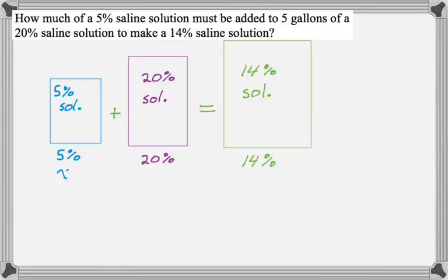I don't know how much 5% I have, so I'm going to call that x gallons. 20% I already have 5 gallons. So when I dump all of those together, I'm going to end up with x plus 5 gallons.